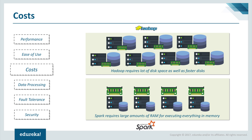Regarding costs: Hadoop and Spark are both Apache open-source projects, so there's no cost for the software — cost is only associated with infrastructure. Both products are designed to run on commodity hardware with low total cost of ownership (TCO). Storage and processing in Hadoop is disk-based and uses standard amounts of memory, so Hadoop needs a lot of disk space and faster transfer speeds, and requires multiple systems to distribute disk I/O. Apache Spark, due to in-memory processing, requires a lot of memory but can deal with standard disk speed and amount.